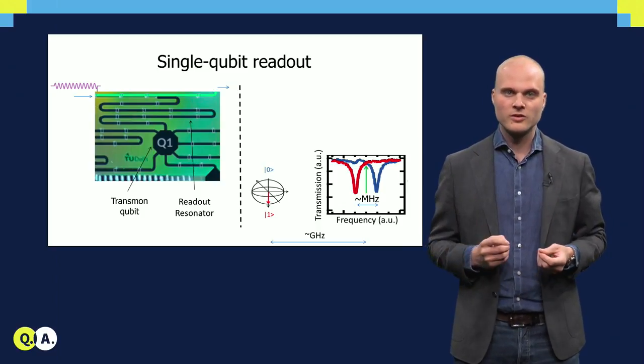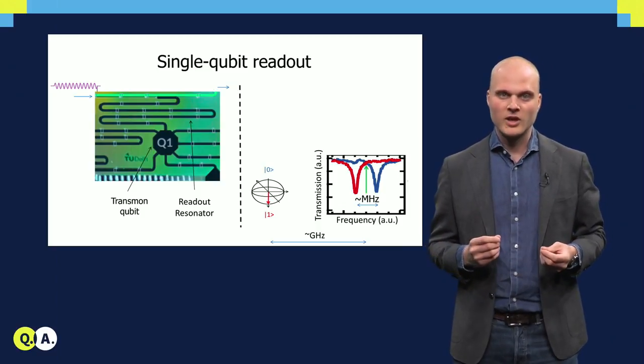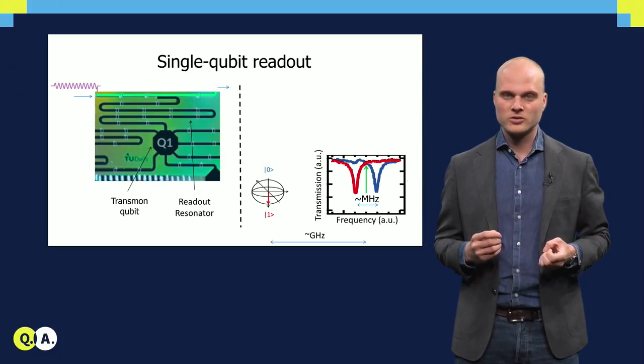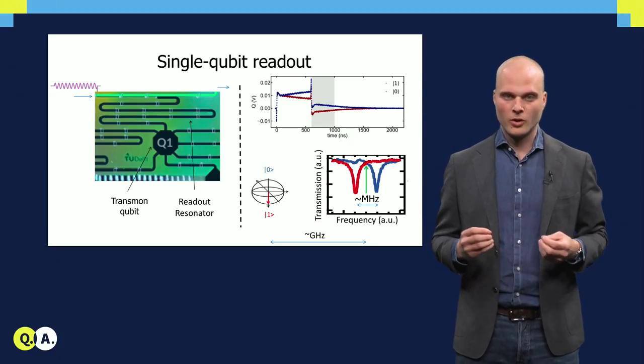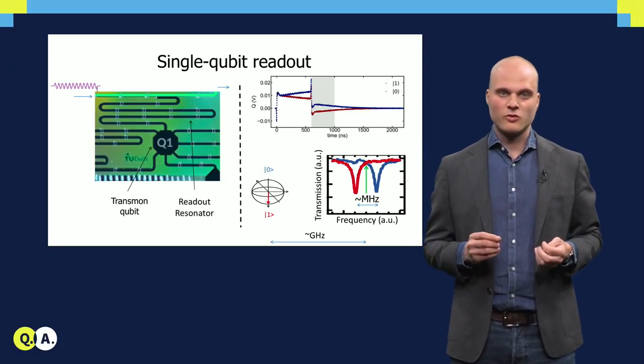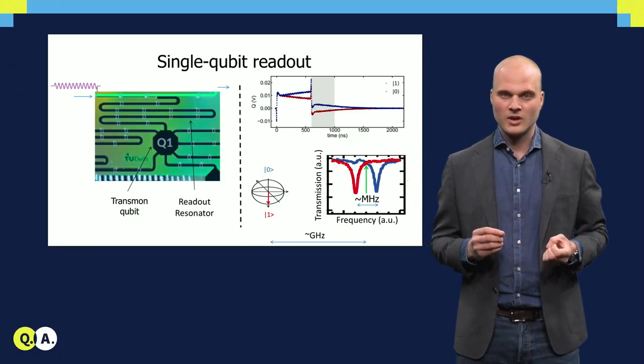We can observe this shift, and thereby the qubit state, by injecting the resonator with a pulse near the resonator frequency. The pulse is reflected by the resonator.